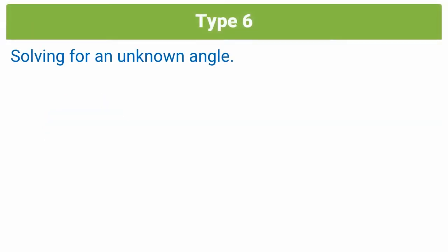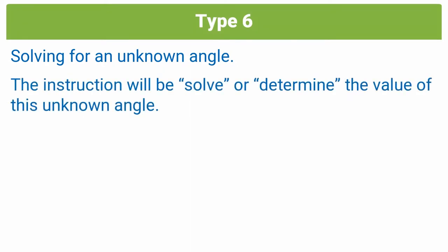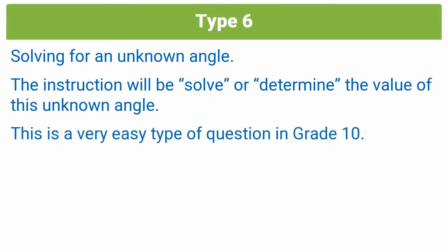So in a Type 6 question, you'll be asked to solve for an unknown angle, and the instruction you'll be given is to solve or determine the value of this unknown angle. So in Grade 10, this is a very easy type of question, and why is that?